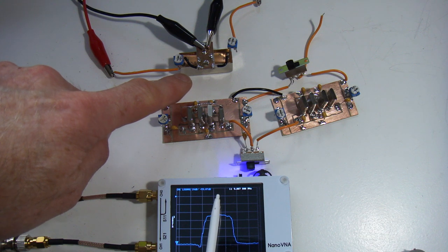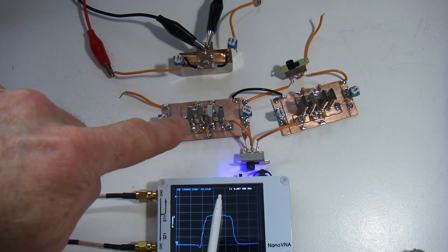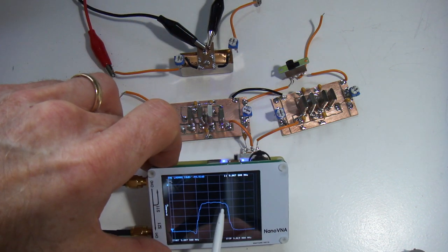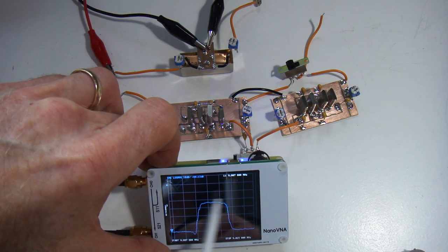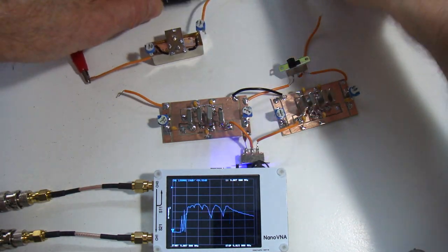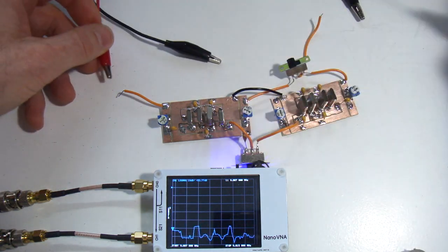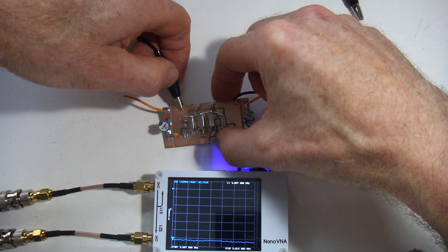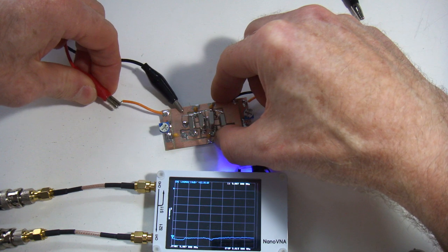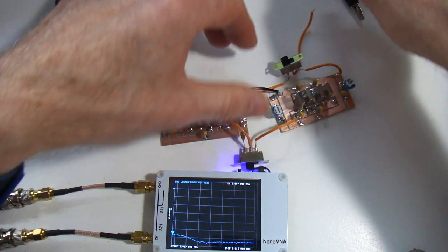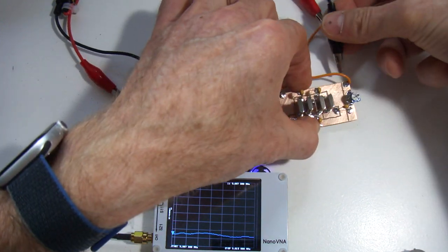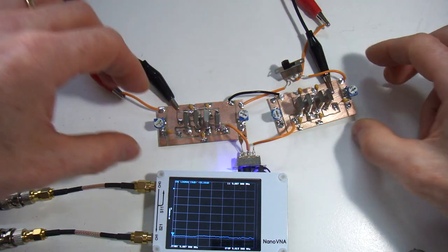Straight away you can tell the steepness of the skirts, the roll off is steeper in that particular filter versus the fourth order, which makes perfect sense because more than likely there's probably going to be 8 crystals in there. In other words, a higher order filter than fourth, maybe 8 or 9. You can certainly see it here with the steeper roll off of the skirts.